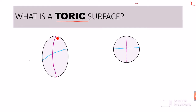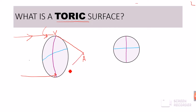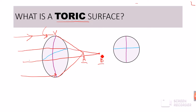In the case of a toric surface, the vertical meridian has more power compared to the horizontal meridian. Therefore, the rays of light will converge sooner from the vertical meridian, focusing at a point A, while the horizontal meridian focuses at a point B, which is farther away. Because the horizontal meridian has less power compared to the vertical meridian, whenever there is a difference in the powers of the meridians, there will not be a single focus as in a spherical surface.